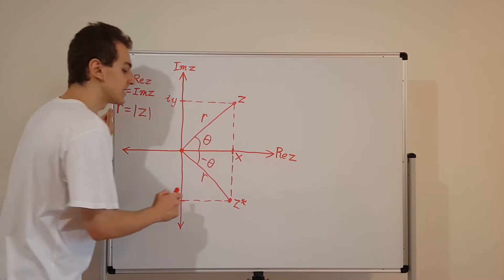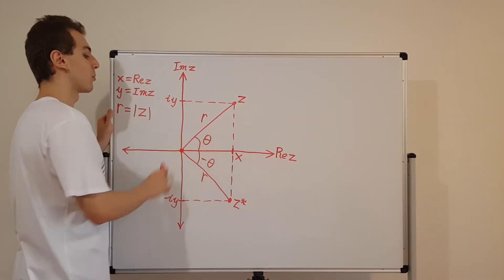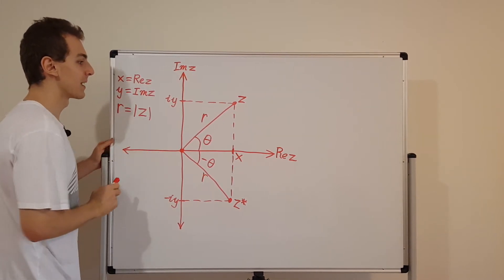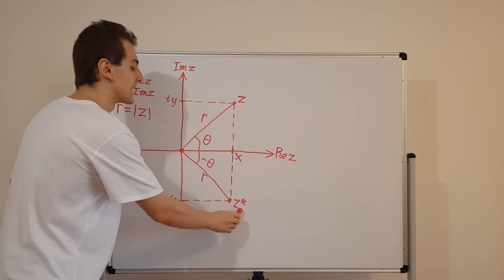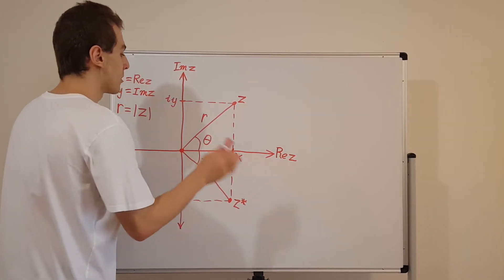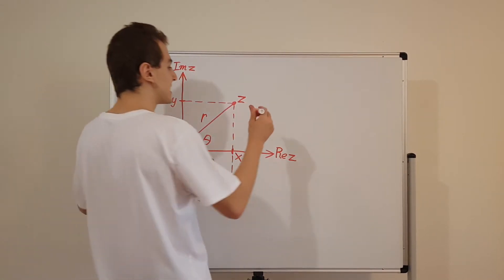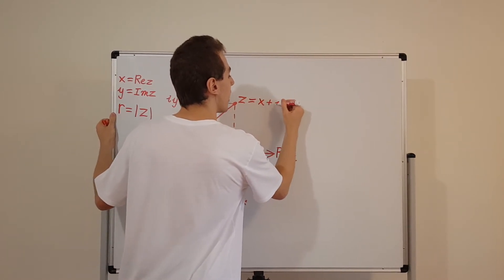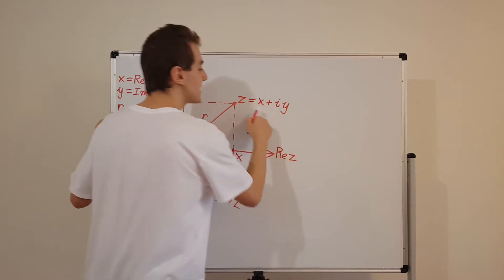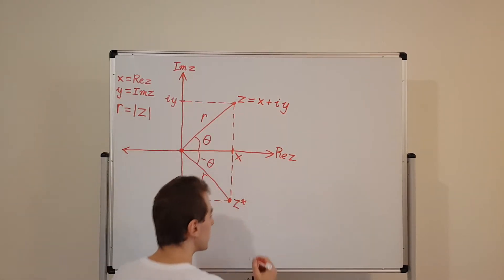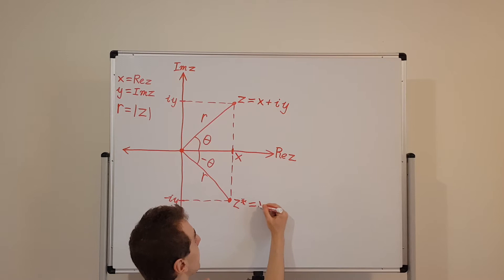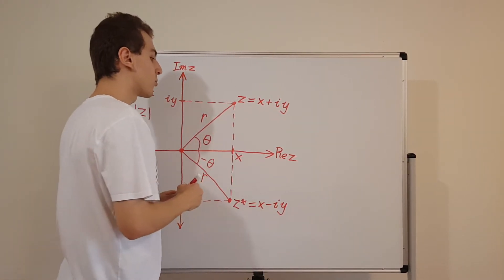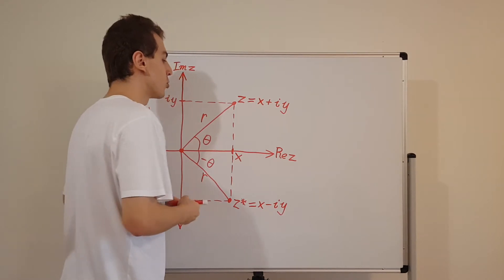So now we have some Cartesian coordinates and some polar coordinates, with some relationships written down. I'm going to start writing z and z star in terms of these Cartesian and polar coordinates. We've seen this in the previous videos — we've seen x plus iy, and we've also seen that the complex conjugate can be written as x minus iy. Now what we're going to do is transform this and turn it into polar coordinates.